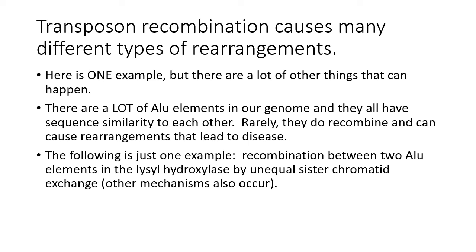Many events are caused by transposon recombination, which makes sense because these elements are scattered all over our genome, making the potential for recombination between them enormous. It's kind of amazing that it doesn't occur more frequently than it does. We're going to do one example today involving exchange between two Alu elements by unequal sister chromatid exchange. This has to do with recombination between two Alu elements within the lysylhydroxylase gene — those two elements are sitting in introns and recombination between them will have bad effects on the lysylhydroxylase gene.